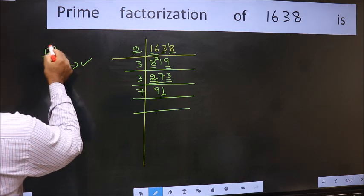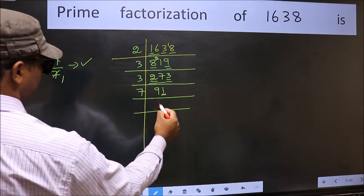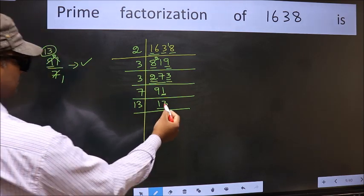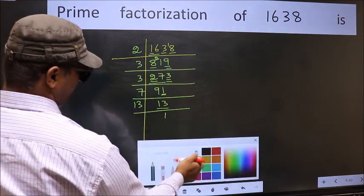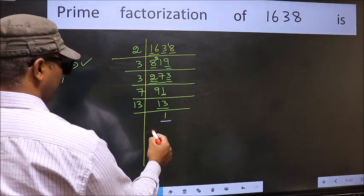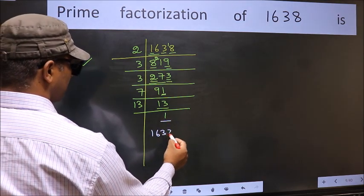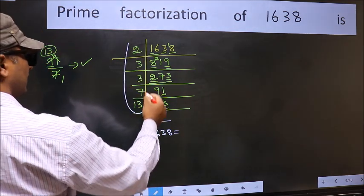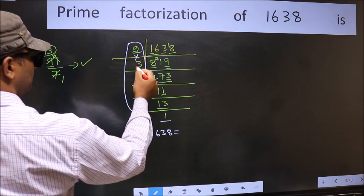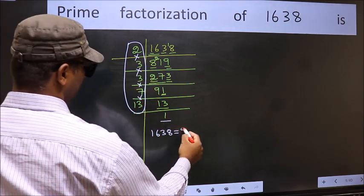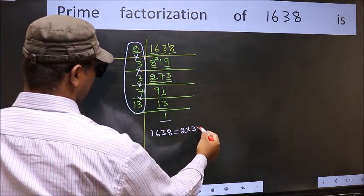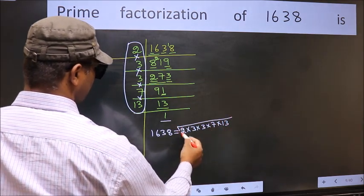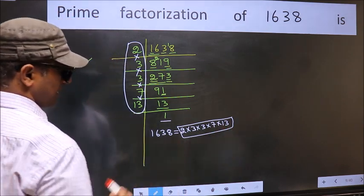And here we write the number 13. Now we have 13, and 13 is a prime number. So 13 ones are 13, and we get 1 here. So the prime factorization of 1638 is the product of these numbers: 2 into 3 into 3 into 3 into 7 into 13. This is the prime factorization of 1638.